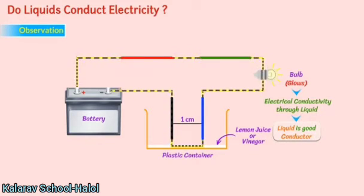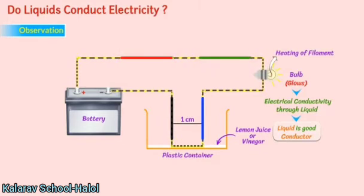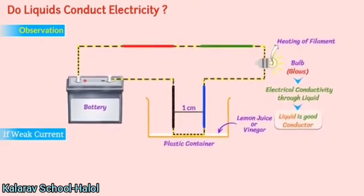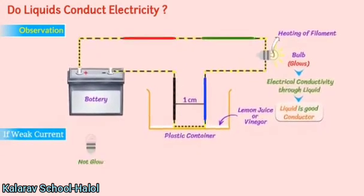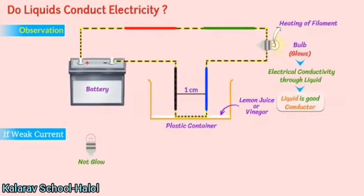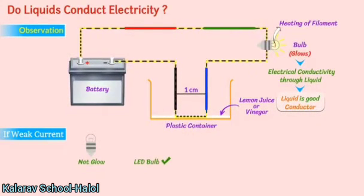The bulb glows as the current causes heating of the filament present inside the bulb. If there is a weak current, then the bulb may not glow. In such a case, we use an LED bulb instead of an electric bulb.